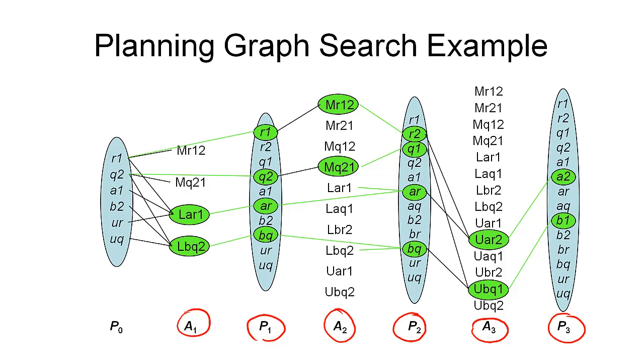And again, we use the precondition links to identify those propositions in layer P0 that we need to be true. And in fact, as you can see here, all six of the propositions in layer P0 are required for this problem. So that means we have found a solution plan in our planning graph.